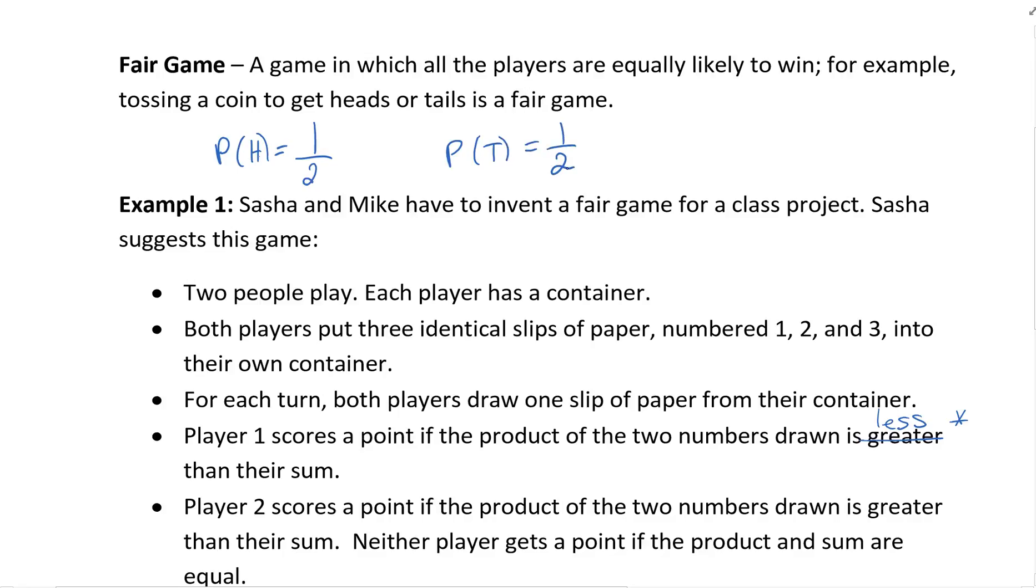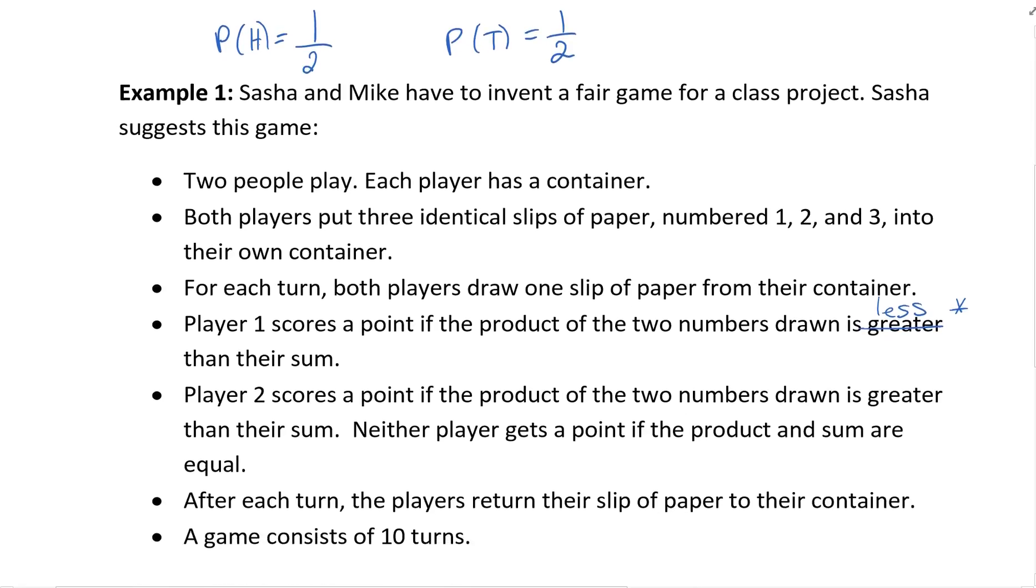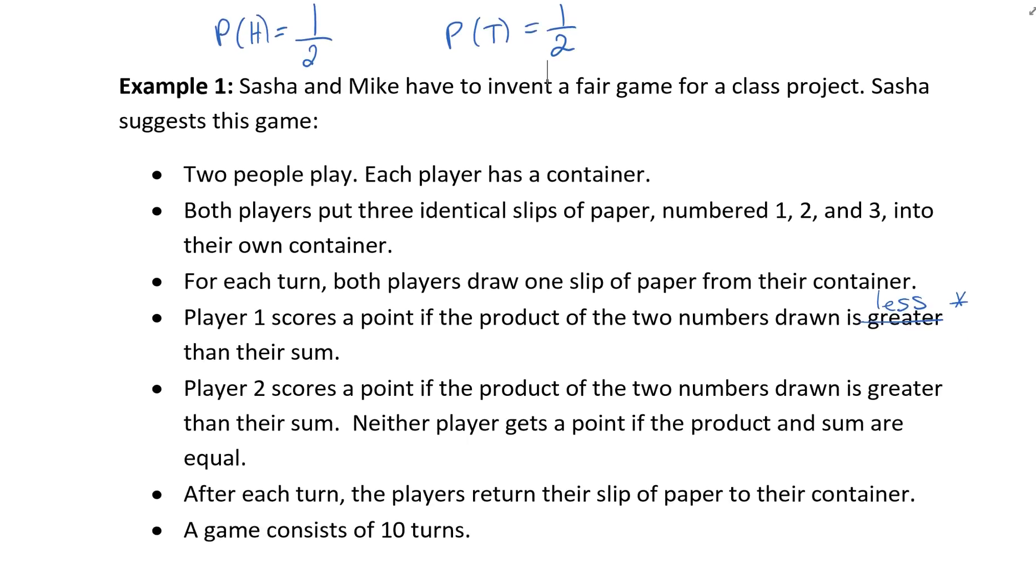So here's a game that we go through, we're going to read through this and decide is this a fair game or is this not a fair game and we're going to use the probabilities to help us decide. So it says Sasha and Mike have to invent a fair game for a class project. Sasha suggests this game, two people play, each player has a container. Both players put three identical slips of paper numbered one, two, and three into their own container.